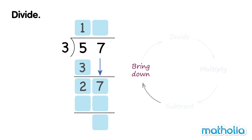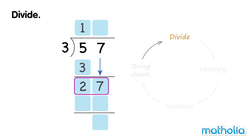Now we have 27 ones. Divide the 27 ones by 3. 27 divide 3 equals 9. We write the 9 in the ones column at the top.